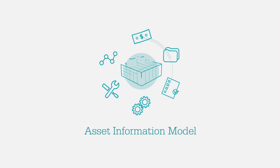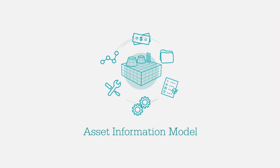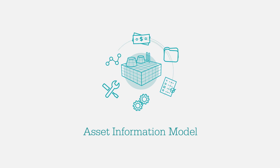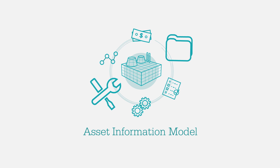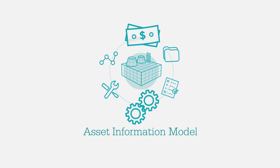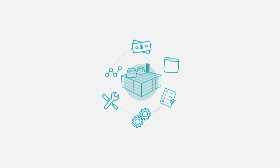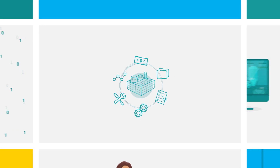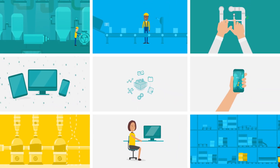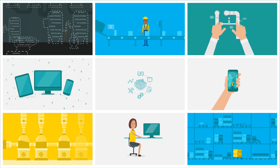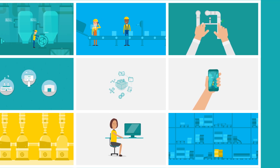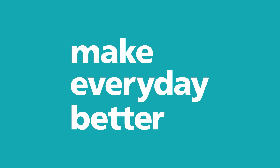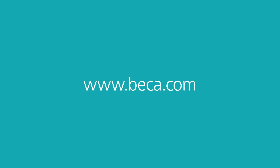An asset information model is a powerful tool to support decision making and create value within your organisation. The scope and scale of the model is up to you and may change over time. Where within the asset lifecycle you create your model is also up to you — you just need to start by understanding how you might want to use the model and what problems you are trying to solve. Interested in how we can help you start scoping and building your digital plant of the future today?